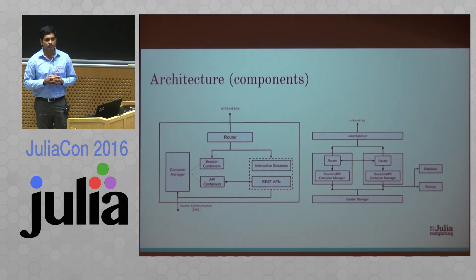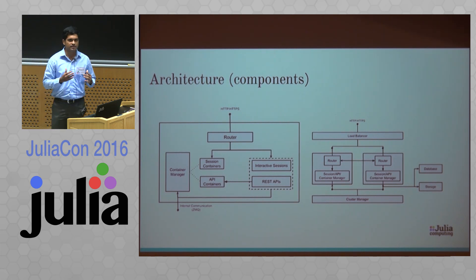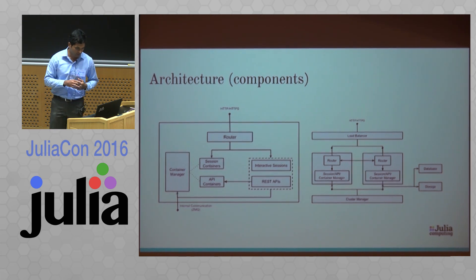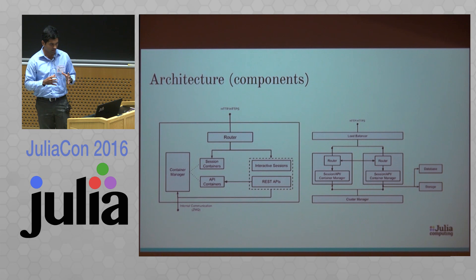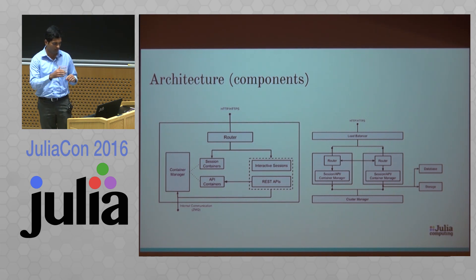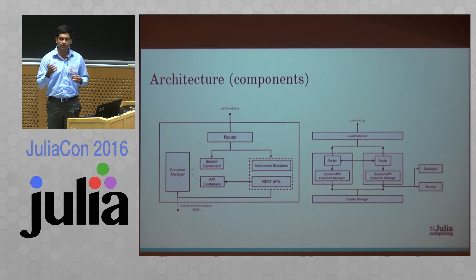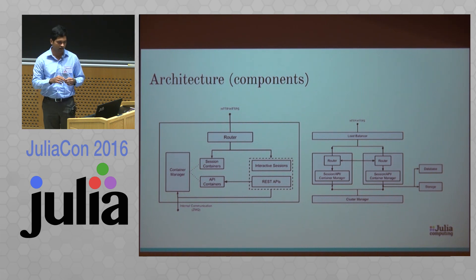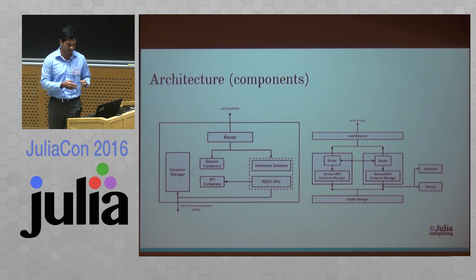This is the architecture of JuliaBox. The architecture is designed for scalability. On the left you see a single instance case — so if you install JuliaBox on your laptop, that's what it's going to be like. You're going to have a router, and for each user you're going to have a Docker container, shown there as session containers, and the router is going to route the sessions to those containers.